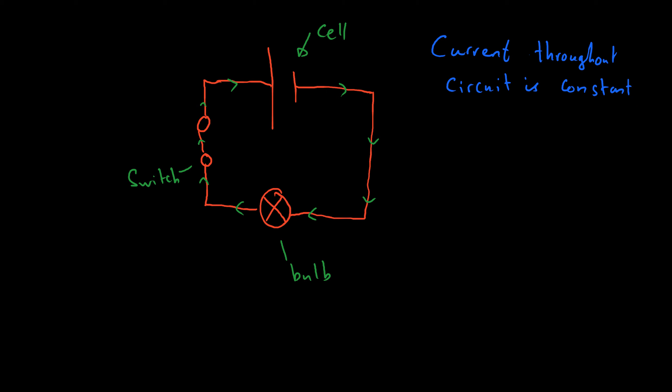What I mean by that is that the current here is equal to the current here, is equal to the current over here, and so on. The current cannot change through a series circuit — it has a fixed value.